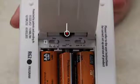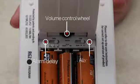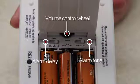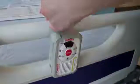The volume control wheel, alarm delay, and alarm tone settings are located inside the battery cover. The default is set to volume low, tone 1, and delay 0. The companion also comes with a wipeable vinyl hanging strap for easy mounting on a bed or chair.